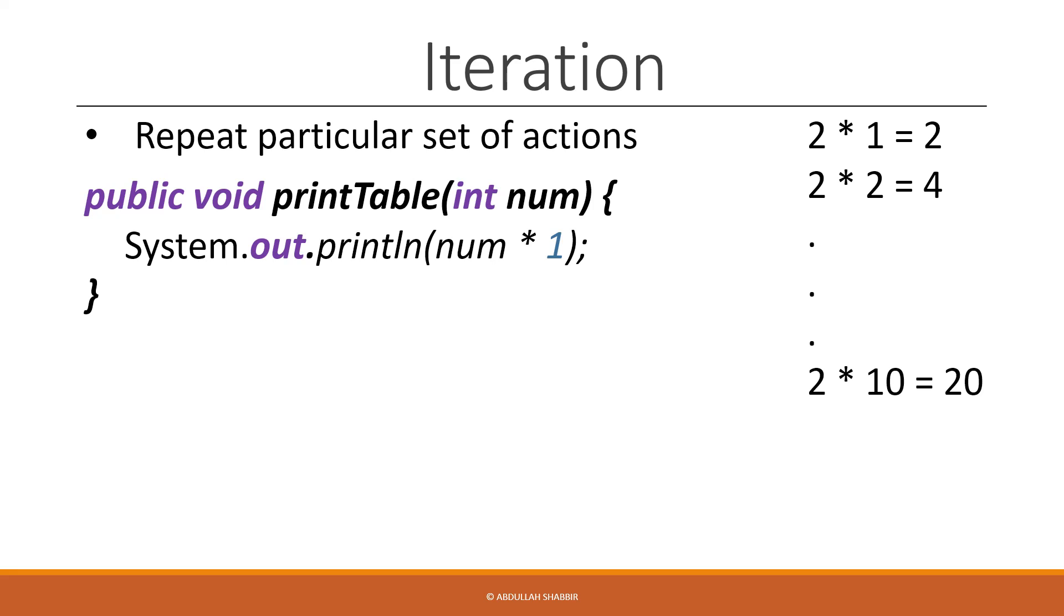Inside the body of the function, we have one print statement which has our parameter num and it is being multiplied by 1. So if our function is called with the argument of 2, it will then print 2. But we want to print the full table from 1 to 10.